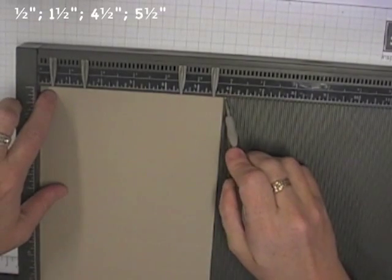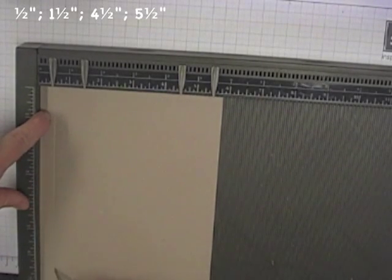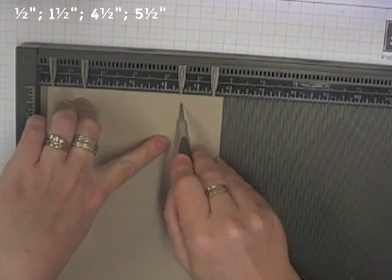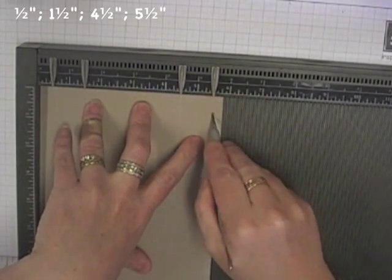And you turn it 90 degrees and you score it at, you can see about the five and seven eighths inch side. You score at a half an inch, one and a half inches, four and a half inches, it's a bit wobbly down the bottom, four and a half inches and five and a half inches.